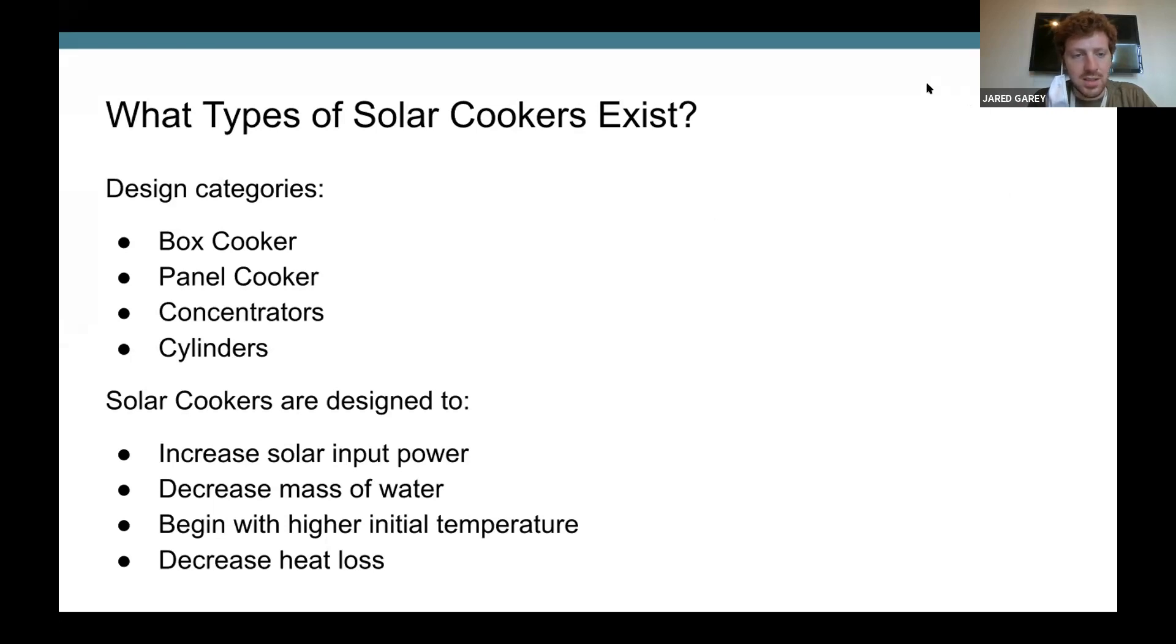And then all these solar cookers, as they're designed, the thought that went into them was to try to increase the solar input power, to decrease the mass of the water, to begin with a higher initial temperature, or to decrease the heat loss. So those are four design parameters.